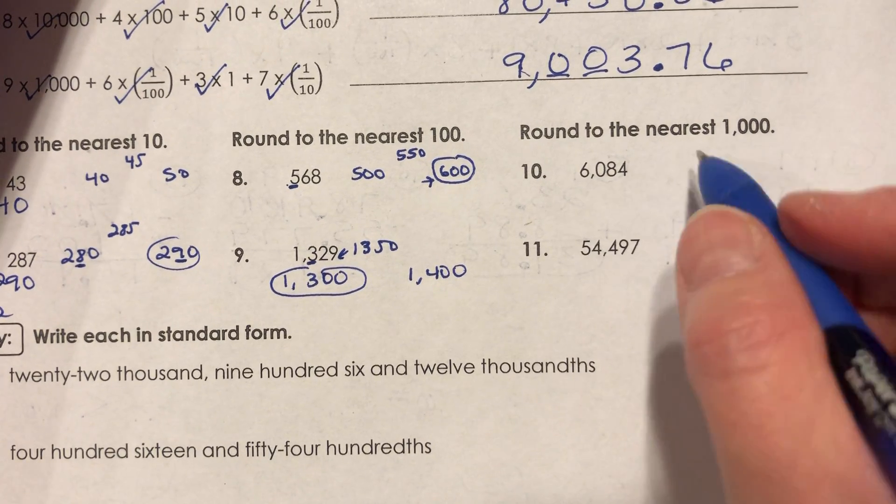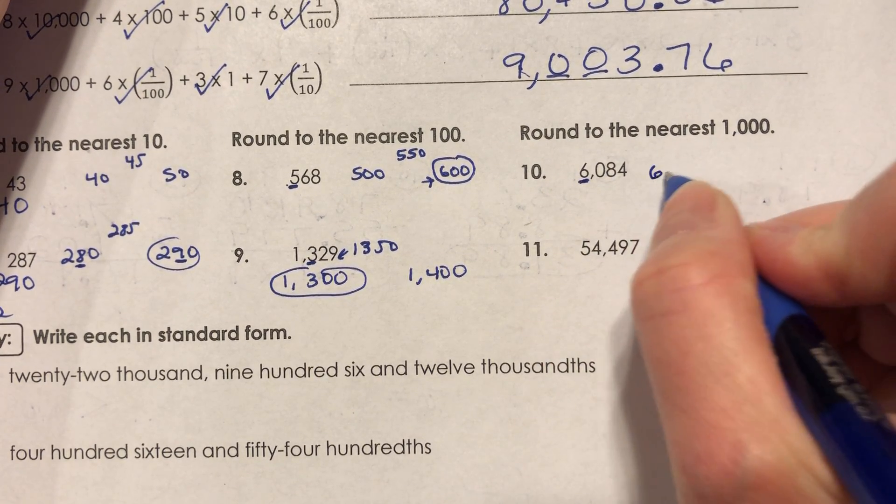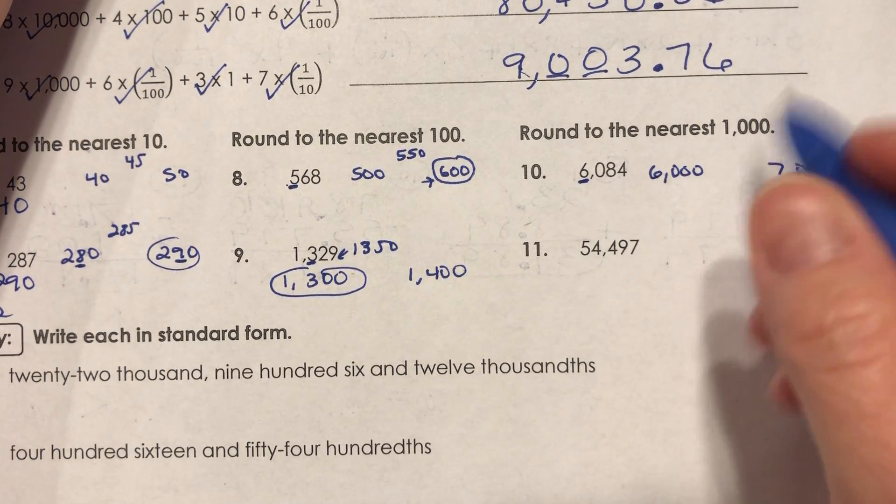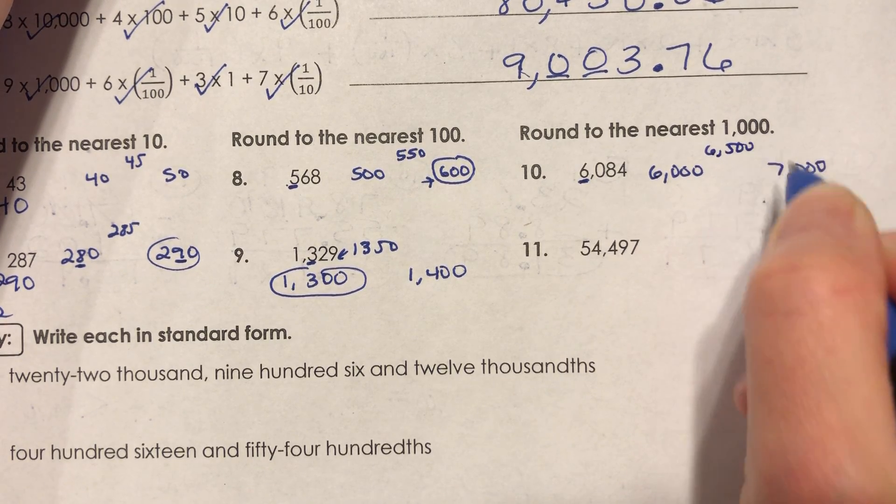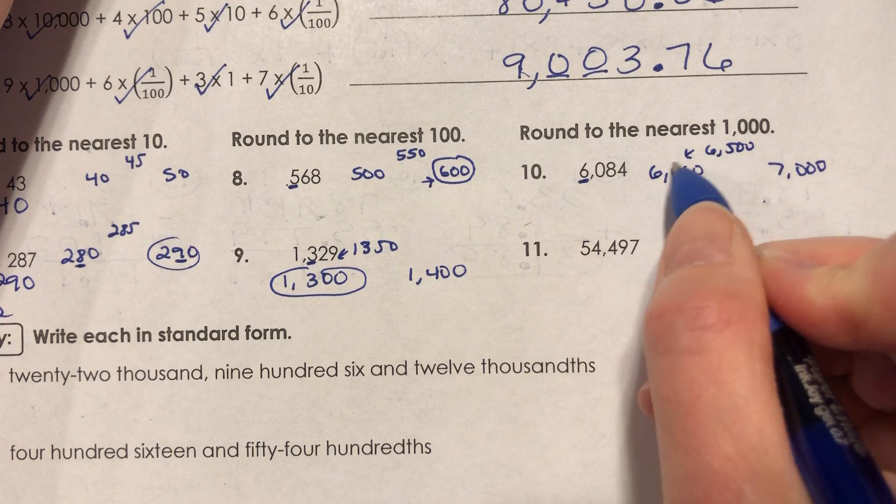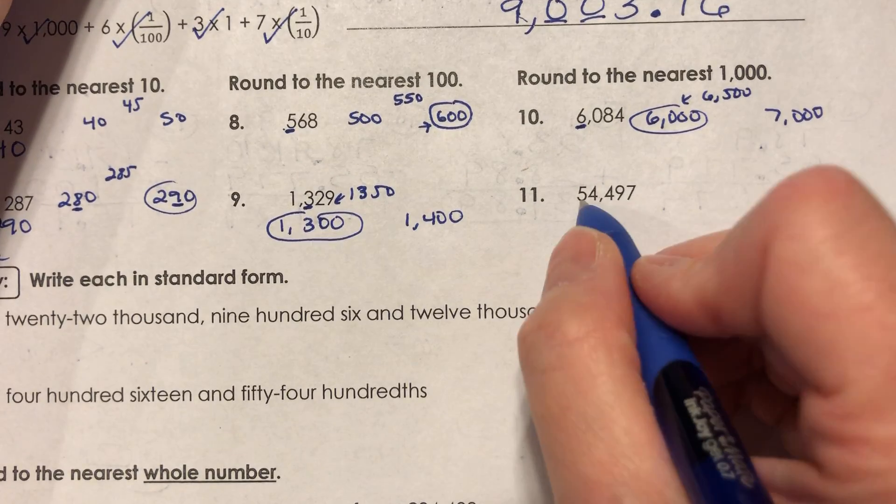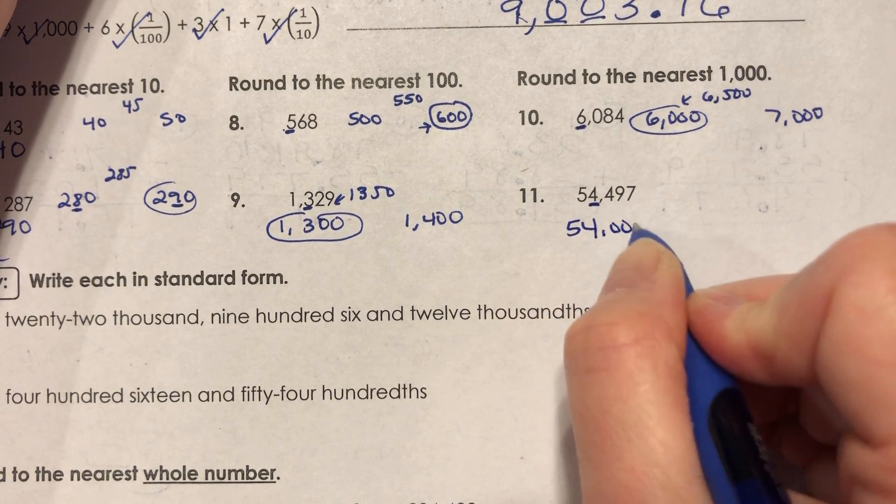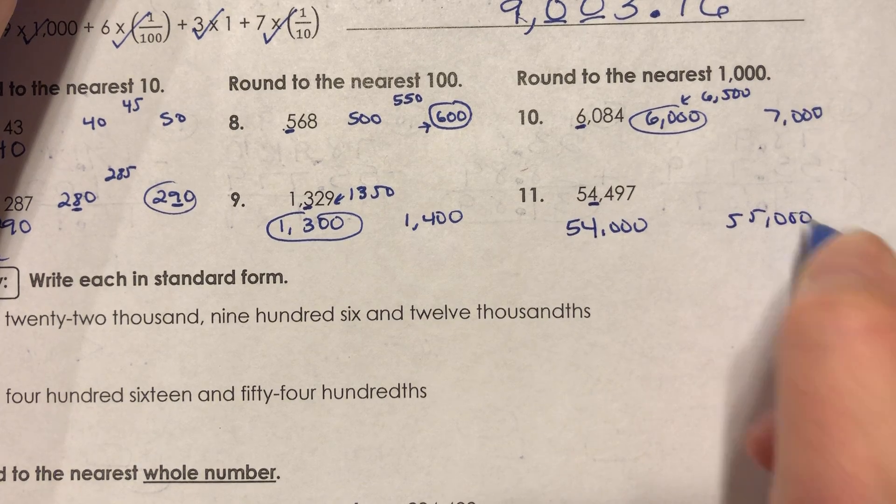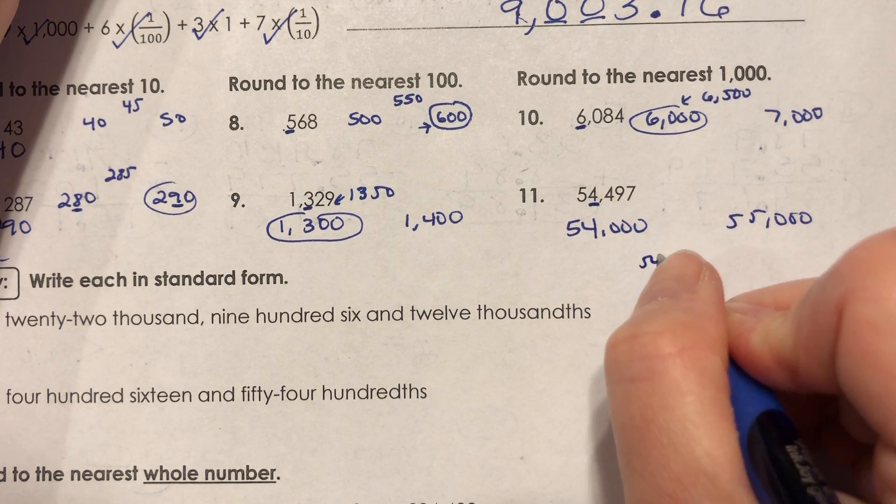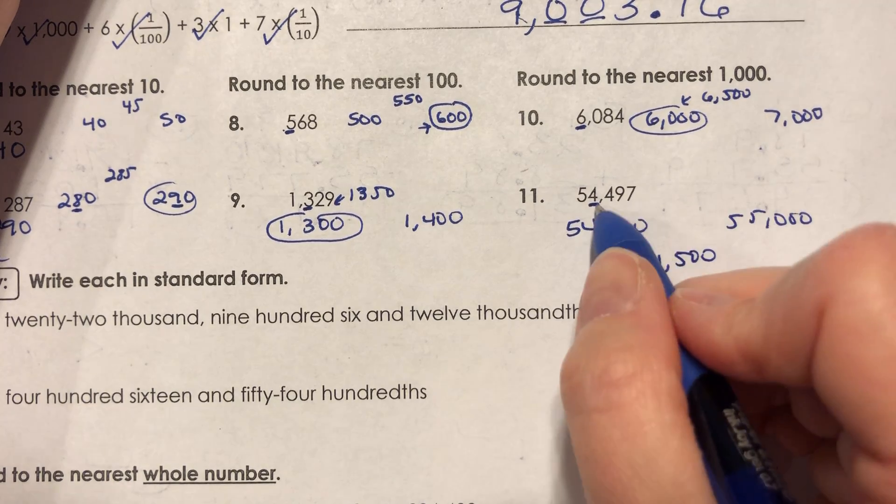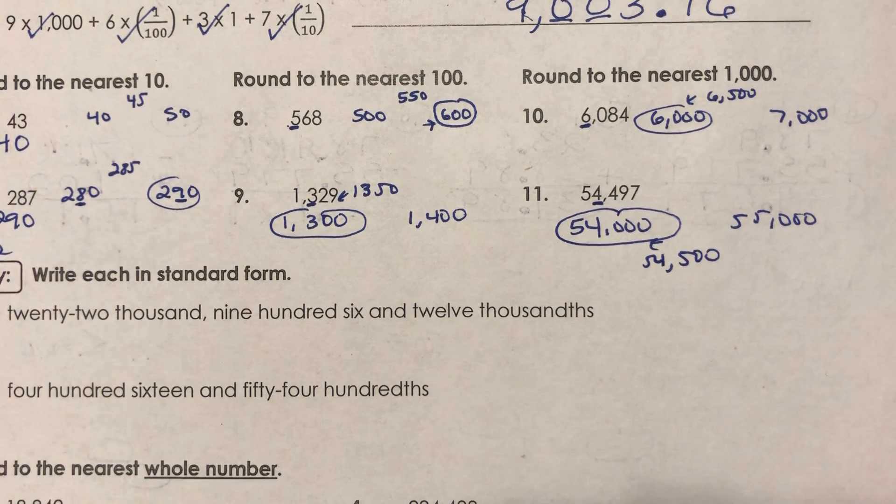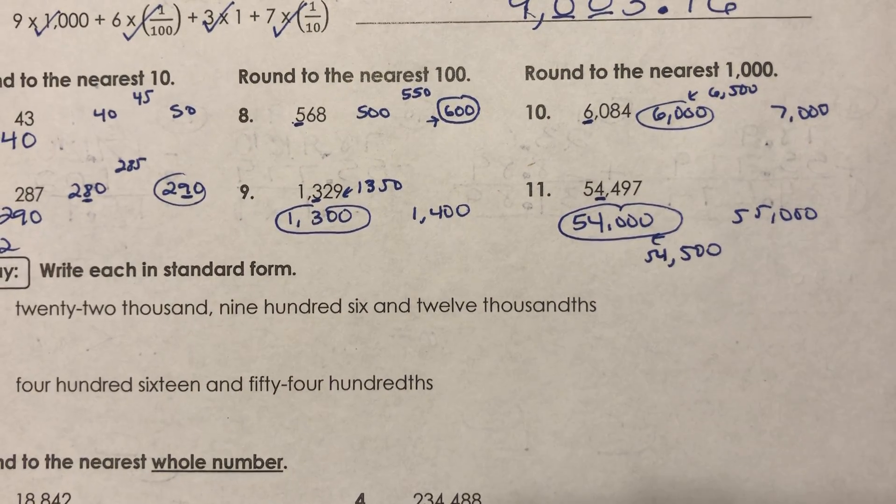And for 10 and 11, I ask you to round to the nearest thousand. So 6,084 is between 6,000 and 7,000 if I'm rounding to the nearest thousands, that's what I'm looking for. The halfway mark is 6,500 and 6,084 is less than halfway, so it would round to 6,000. For number 11, this four is in the thousands place, so this is either gonna be 54,000 or 55,000. The halfway mark would be 54,500 and 54,497 is less than halfway, so 54,000 would be rounded to the nearest thousand. You are all set. Good luck with the rest of your work for today.